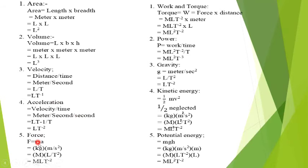Now we work on force. The formula is F equals mass times acceleration. Mass unit is kg with symbol capital M, and acceleration is meter per second squared with dimension LT⁻². So force dimension is MLT⁻².